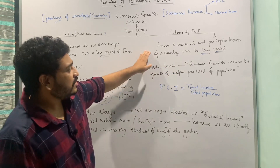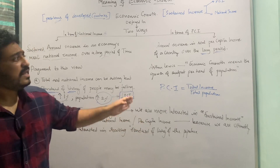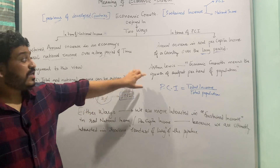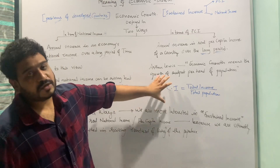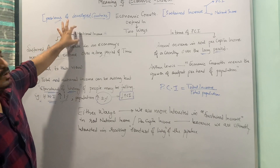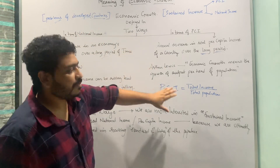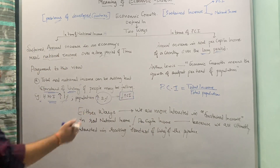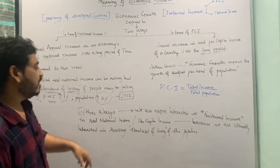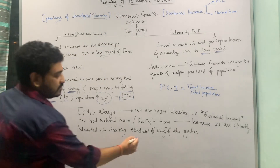Now let us look at what Arthur Lewis says about economic growth. He says that economic growth means the growth of output per head of population. So he is incorporating population here. The earlier definition only talked about real national output or national income, but here we are looking at both population and total income. Either way, we are interested in two important things: sustained increase in national income or per capita income.